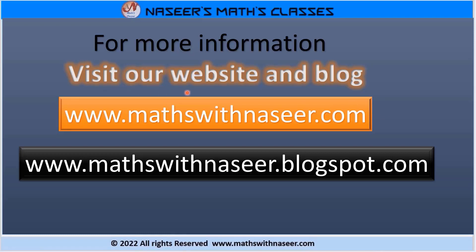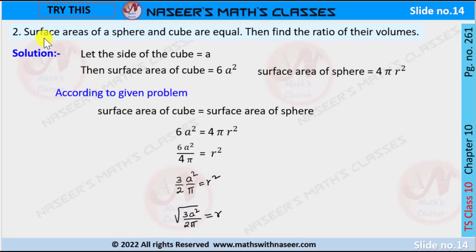For more information visit our website www.mathswithnaseer.com and blog www.mathswithnaseerblogspot.com. Now we are going to solve page number 261, chapter 10, question 2: the surface area of a sphere and a cube are equal — find the ratio of their volumes.